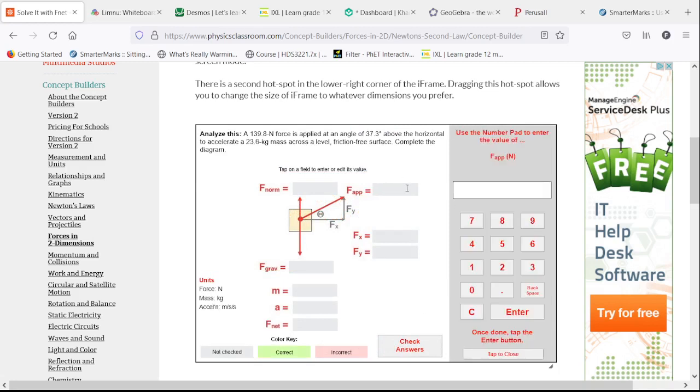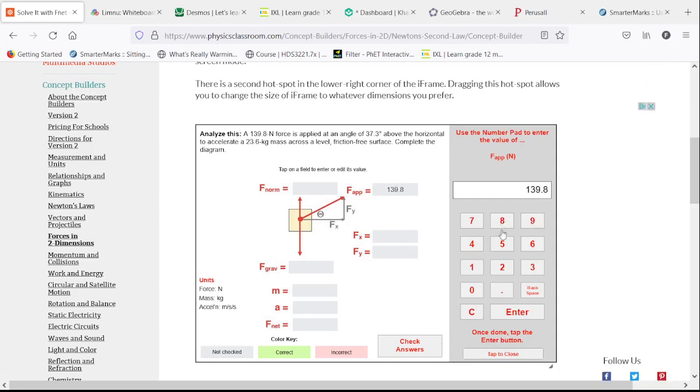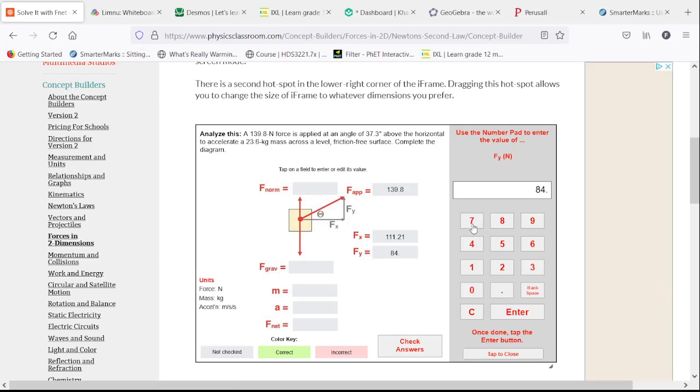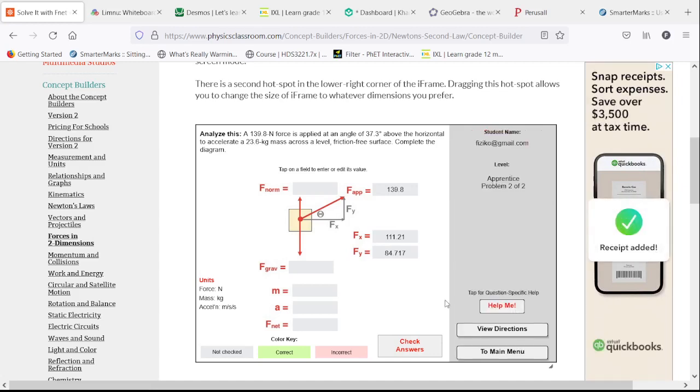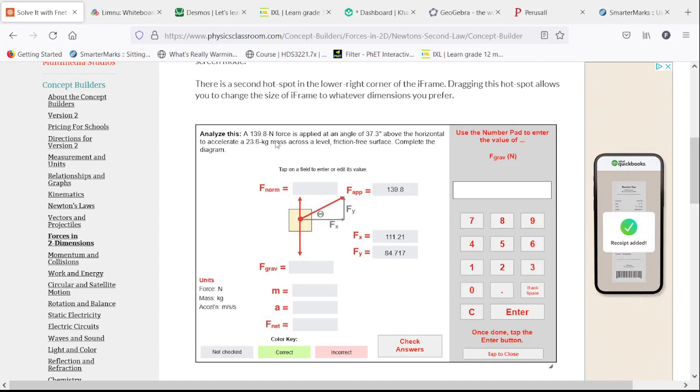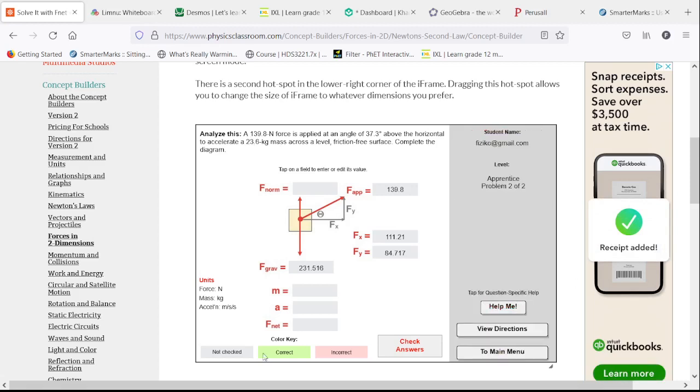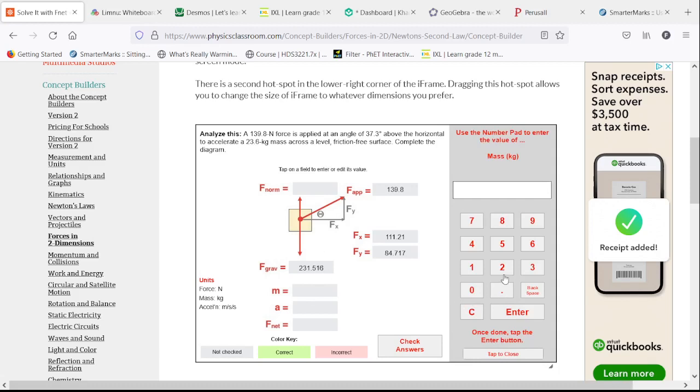Our second problem is exactly the same thought process, just with different numbers. We start with 139.8 as our applied force. We take 139.8 and multiply it by the cosine of 37.3 degrees, which gives us 111.21. That same 139.8 times the sine of 37.3 gives us our vertical component of 84.7. Our force of gravity is Mg, so that's 23.6 kilos times 9.81, giving us 231.516.